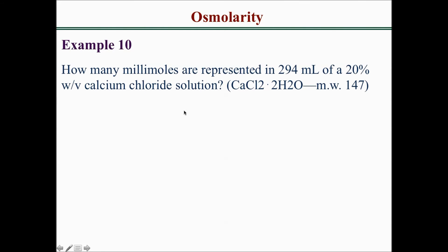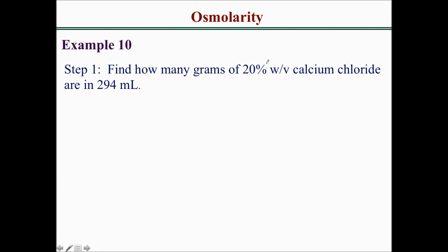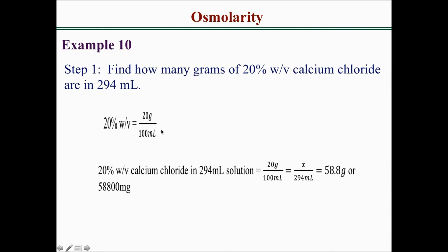Example 10: calculate how many millimoles are represented in 294 ml of a 20% weight by volume calcium chloride solution, given that the solution has a molecular weight of 147. Step 1 is to find how many grams of 20% weight by volume calcium chloride are in 294 ml, keeping in mind that 20% w/v means 20 grams in 100 ml.